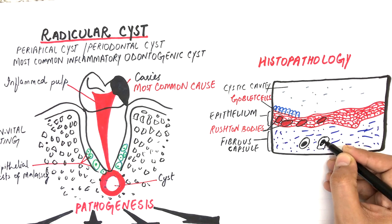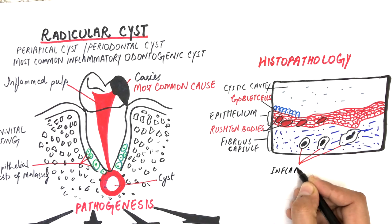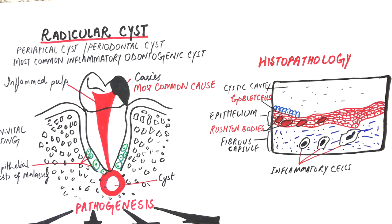The fibrous connective tissue wall of the cyst often have some chronic inflammatory infiltrates like lymphocytes, plasma cells, mast cells, macrophages, and some other inflammatory cells.